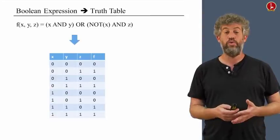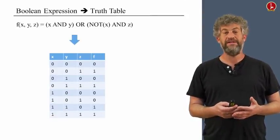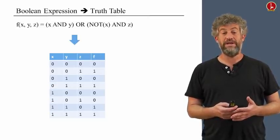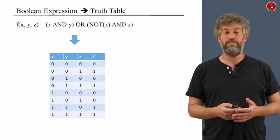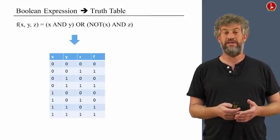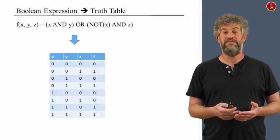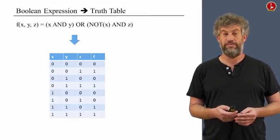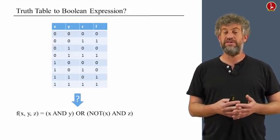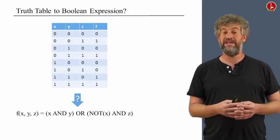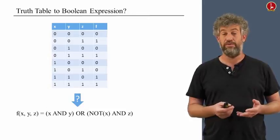We've already seen two ways to represent a Boolean function: a Boolean expression and a truth table. We also already know how to go from the expression to the truth table. You take the expression, evaluate it for each possible value of the input bits, and then you can fill the truth table. What we want to do now is exactly the opposite. You start with a description of a function, given as a truth table, and our challenge is to come up with a formula that computes the same Boolean function.